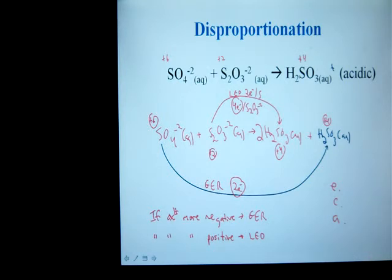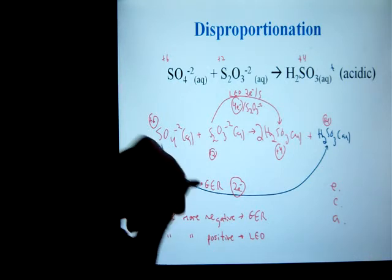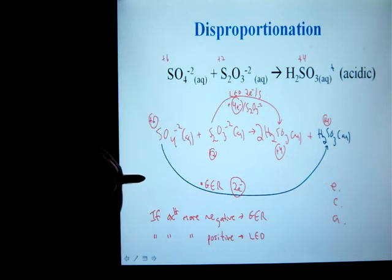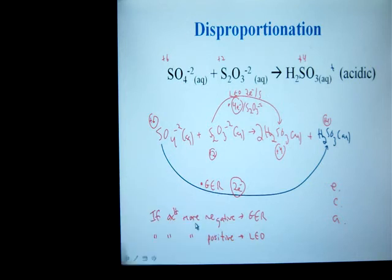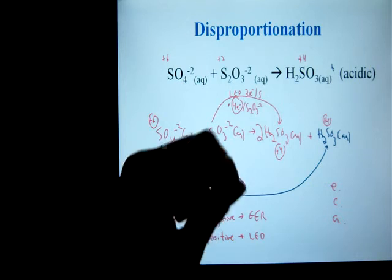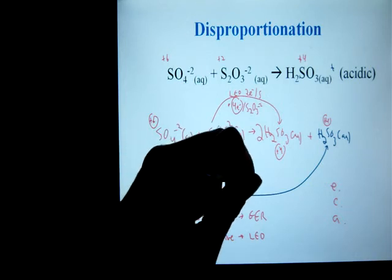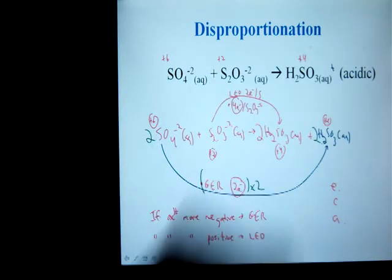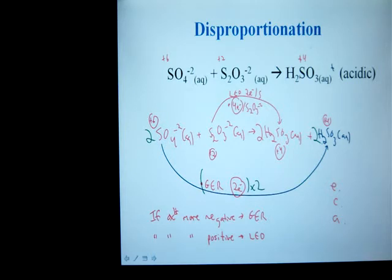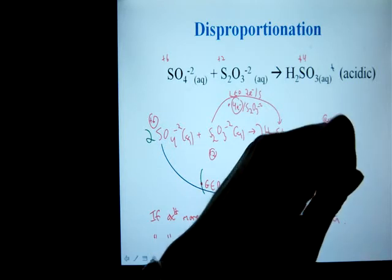So I've got a two electron gain, four electron loss. You have to multiply my sulfate half reaction by a factor of two. So I put a two here and a two there. So that's good. My electrons are now done.